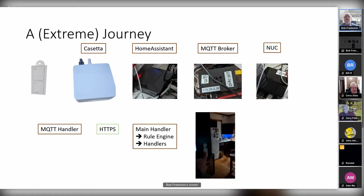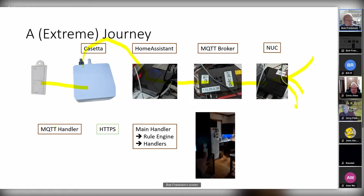When I press the button on this Leviton, it sends a proprietary radio message to an interface at the Caseta. That goes over Ethernet to Home Assistant, then via MQTT through another Pi machine, then to my main machine — a little Nuc box — which is listening for the message. The MQTT handler then uses HTTPS within that box to send a message to the main program, which goes to the rule engine recursively and then sends messages out to all the handlers.